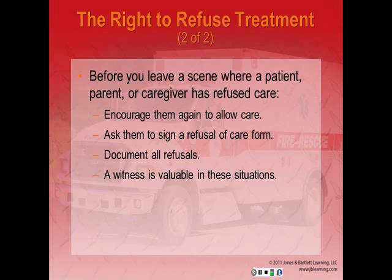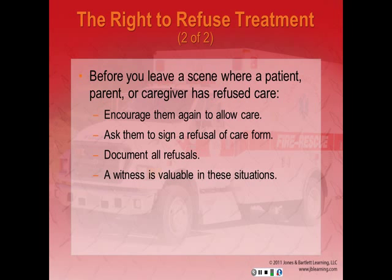A patient's, parent's, or caregiver's decision to accept or refuse treatment should be based on the information you provide. You need to tell them your assessment findings and what might be wrong, describe the treatment you feel is necessary, explain any possible risks of treatment, the availability of alternative treatments, and the possible consequences of refusing — including that they could die if their condition is life-threatening. Don't be afraid to tell a patient that if they don't get appropriate treatment, they could die.